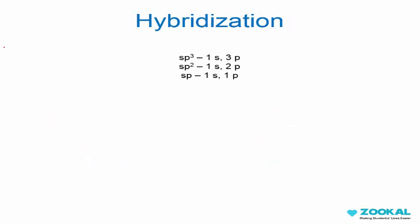But things are not so simple. Carbon for example has four electrons in its valence shell so it has an electronic configuration of 1s2, 2s2, 2p2.